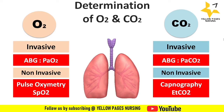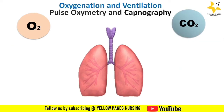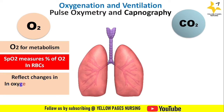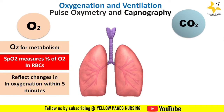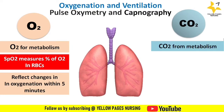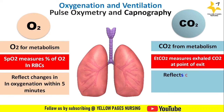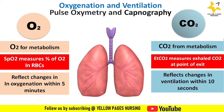Pulse oximetry versus capnography — oxygenation versus ventilation. Oxygen is needed for metabolism; SpO2 measures the percentage of oxygen in RBCs and reflects changes in oxygenation within five minutes. CO2 is the end product of metabolism; EtCO2 measures exhaled carbon dioxide at the point of exit and reflects changes in ventilation within 10 seconds.